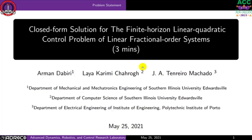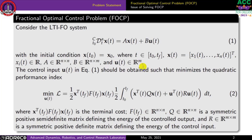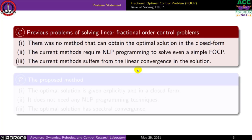Hi, my name is Armand Dewey, and I'm presenting a closed-form solution for the finite horizon linear quadratic control problem of linear fractional order systems. We propose a closed-form solution for the optimal control problem associated with equations 1 and 2, where equation 1 has linear time-invariant fractional order system dynamics, and we find control input u to minimize the cost function in equation 2, a finite horizon problem since the final time Tf is bounded. Current methods cannot find the optimal solution in closed form and are associated with nonlinear programming, and suffer from slow convergence in the solution.